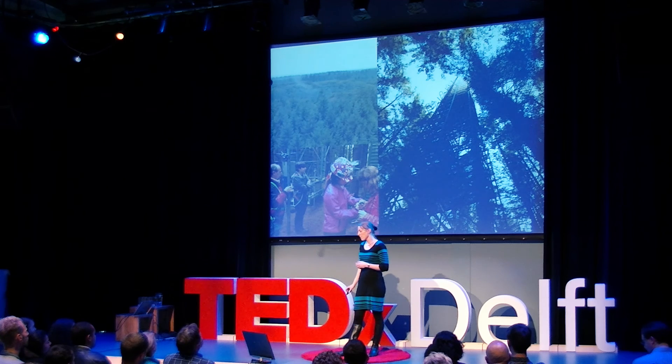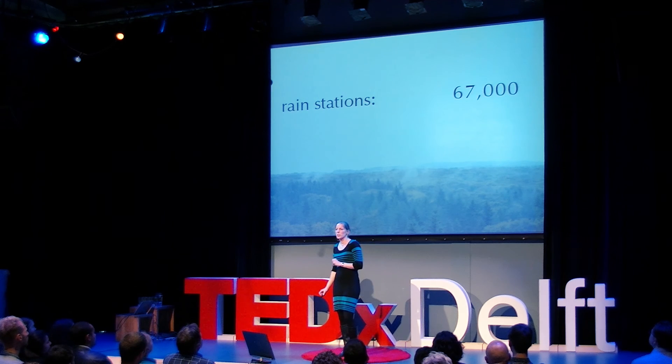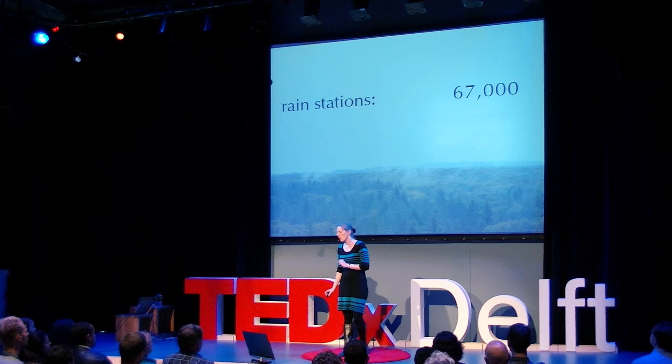And this is the way we try to help to understand evaporation better — to avoid floods, droughts, to be prepared for climate change and land use changes, but more importantly, to secure our food. And as a reference for you, did you know that worldwide there are 67,000 official rain stations, while there are only 439 evaporation stations in the world? So don't you think we should measure a bit more evaporation in the world? Thank you.